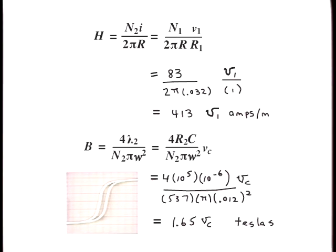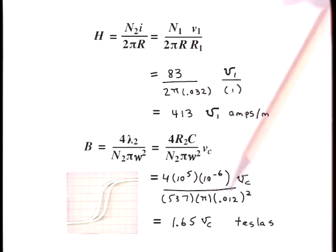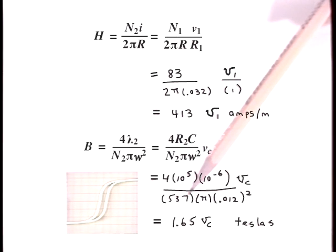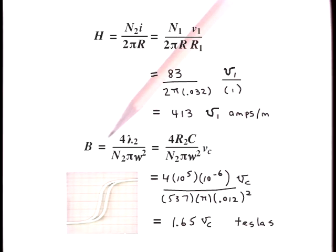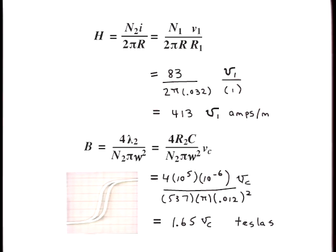The minor diameter of the secondary coil is 1.2 centimeters. There are 537 turns. The integrating circuit has resistance 100k ohms and capacitance 1 microfarad. The scaling factor relating integrating capacitive voltage V sub C to magnetic flux density B is 1.65. With a vertical scale of a half a volt per centimeter, each vertical deflection of 1 centimeter is 0.83 teslas. Thus, for this core, saturation is reached at B approximately 2 teslas for an H field of about 500 amps per meter.